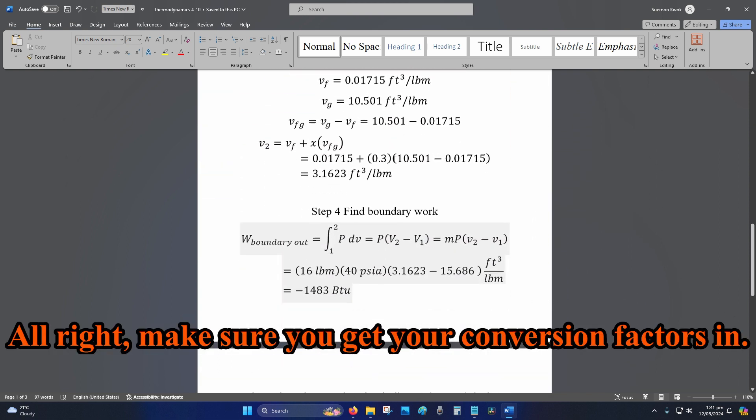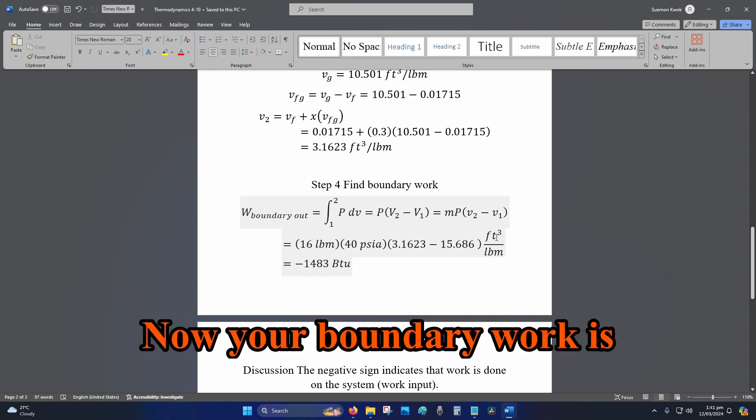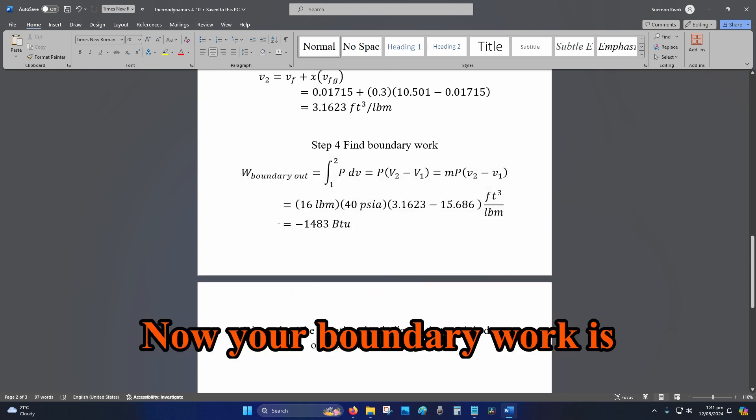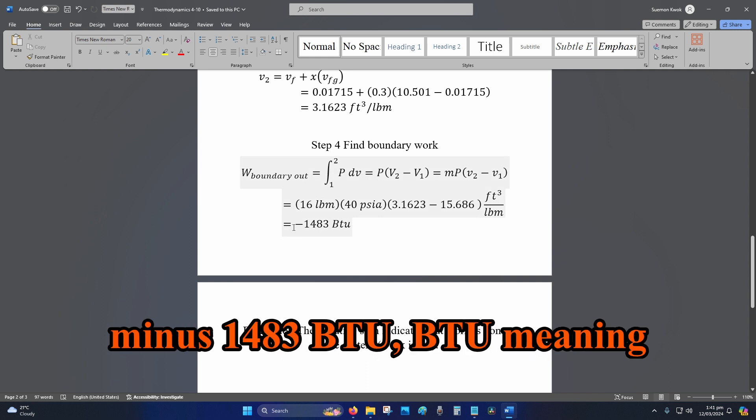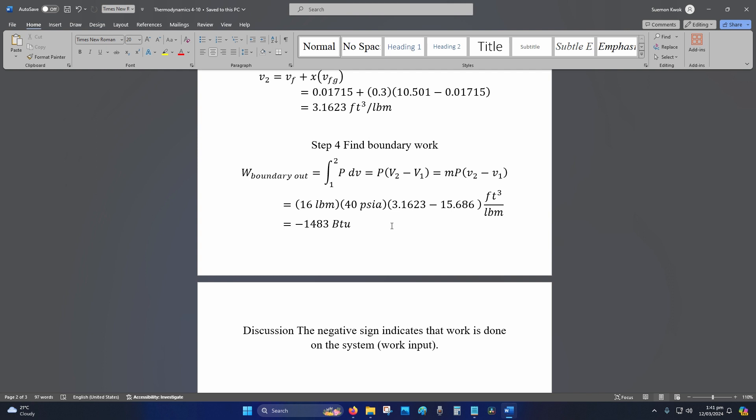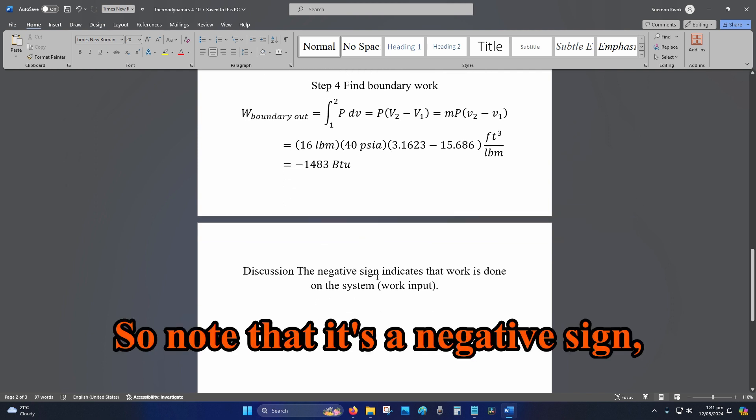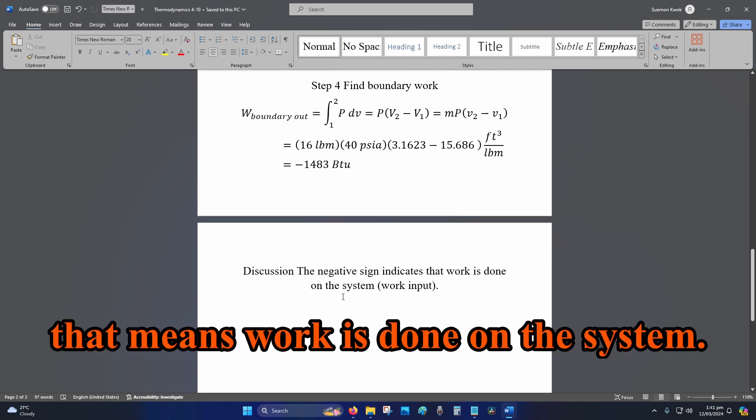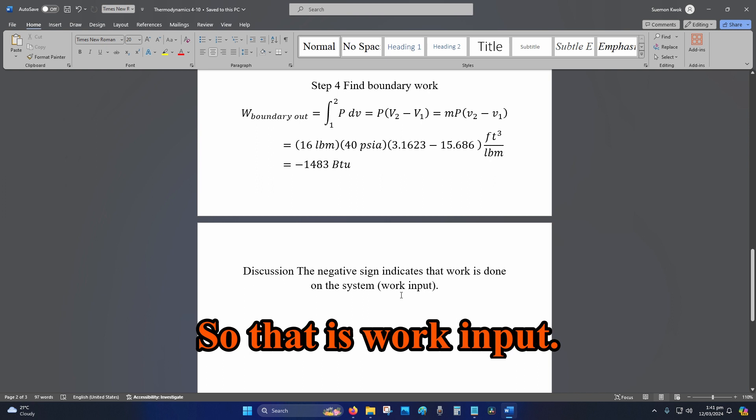Alright. Make sure you get your conversion factors in. Now your boundary work is minus 1483 BTU. BTU meaning British Thermal Units. So note that it's a negative sign. That means work is done on the system. So that is work input.